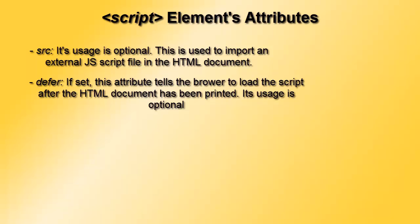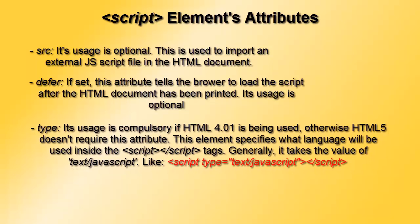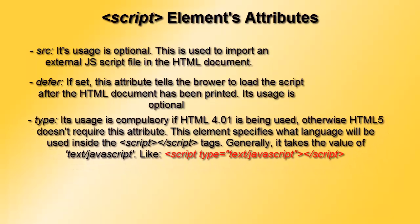The last attribute we will look at is the type attribute of the HTML script element. This type attribute is optional in HTML5, but if you are using an HTML 4.0 doctype it is a required attribute. It takes the value of text/javascript to tell the browser that we are going to write JavaScript code inside the script tag pairs.